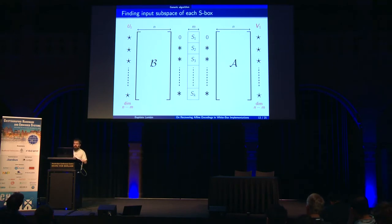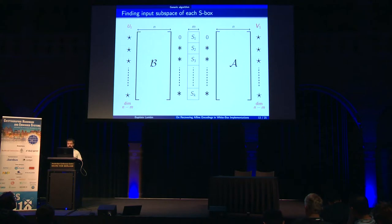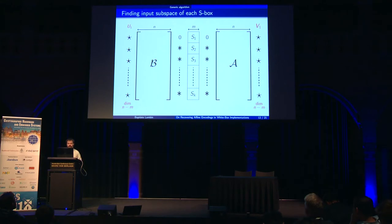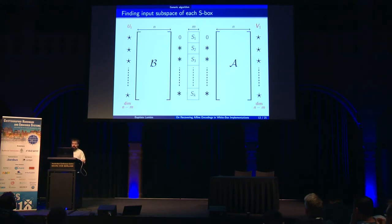This leads to a space of dimension N minus M after A. Since A must be invertible, V1 must be of dimension N minus M as well. Since all S-boxes are bijective, if the input is constant the output is constant too, and if the rest takes all possible values, so does the output. Through B, which is also invertible, the output space of V1 is also of dimension N minus M. We will use this property to build V1.